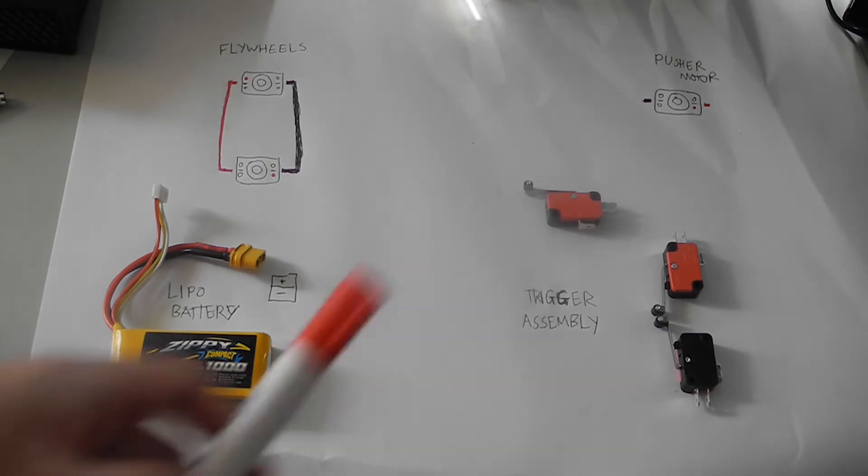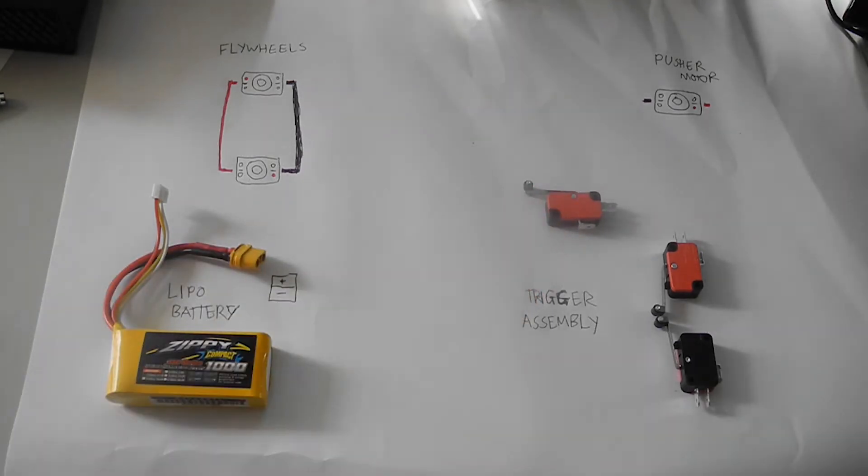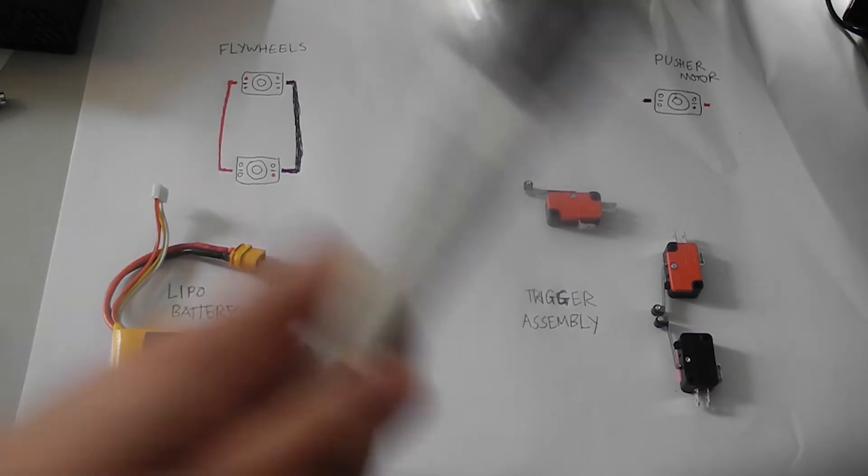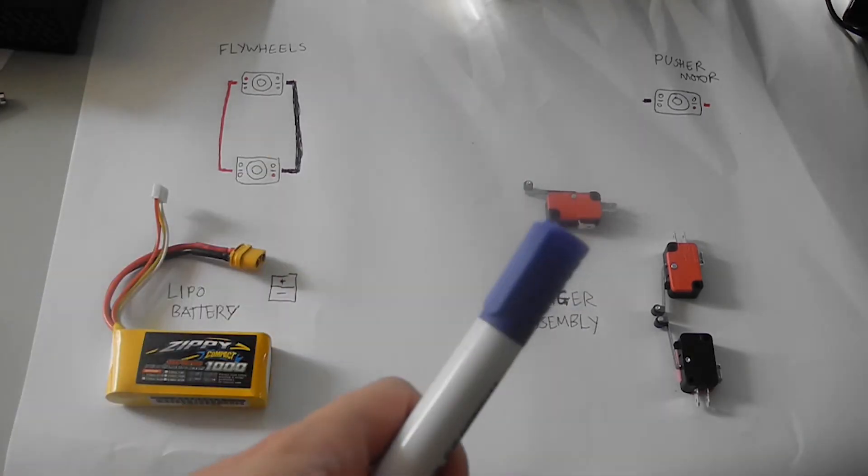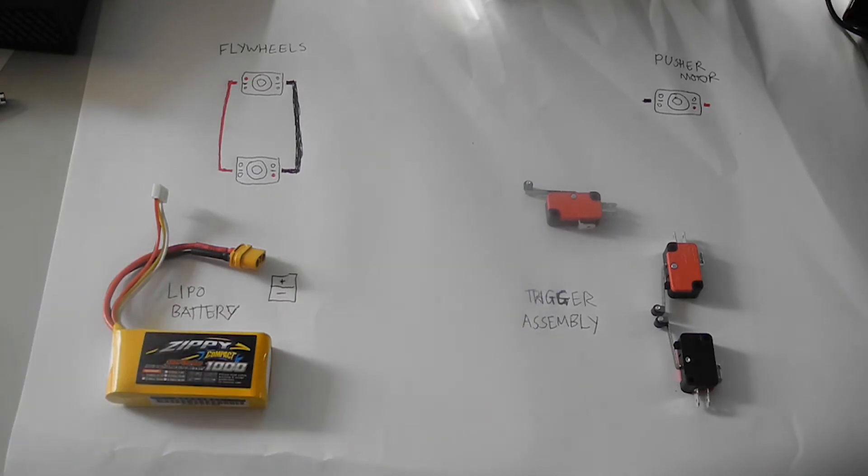I will be using three different markers where red will represent the positive wire, black will represent the negative wire, and blue will represent any feeds.